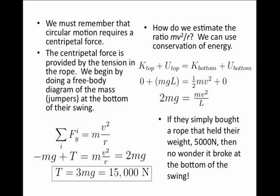It's no surprise, then, if the jumpers bought a rope that was rated to hold their own weight—in other words, 5,000N—that the rope would break at the bottom of the swing, because in fact, at the bottom of the swing, the tension of the rope would have to equal 3 times the jumper's weight just to keep them moving in a circular path.